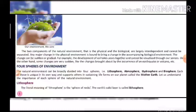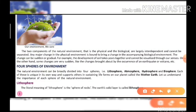The environment is divided into four spheres: lithosphere, atmosphere, hydrosphere, and biosphere. Litho means land, so lithosphere is the sphere of land. Atmosphere means the sphere of air. Hydro means water, so hydrosphere is the water sphere. And biosphere means the life sphere.